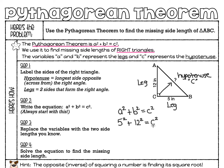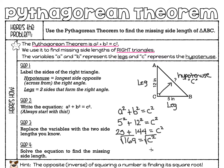So I've got 5 squared plus 12 squared equals C squared. Now it's time to do a little math: 5 squared is 25, 12 squared is 144, and that equals C squared. We're going to add 25 and 144 together to get 169 equals C squared. The last step is to undo C to the second power — the inverse of squaring a number is finding its square root. The square root of C squared is just C, and the square root of 169 is 13. So this missing side length is 13 inches.